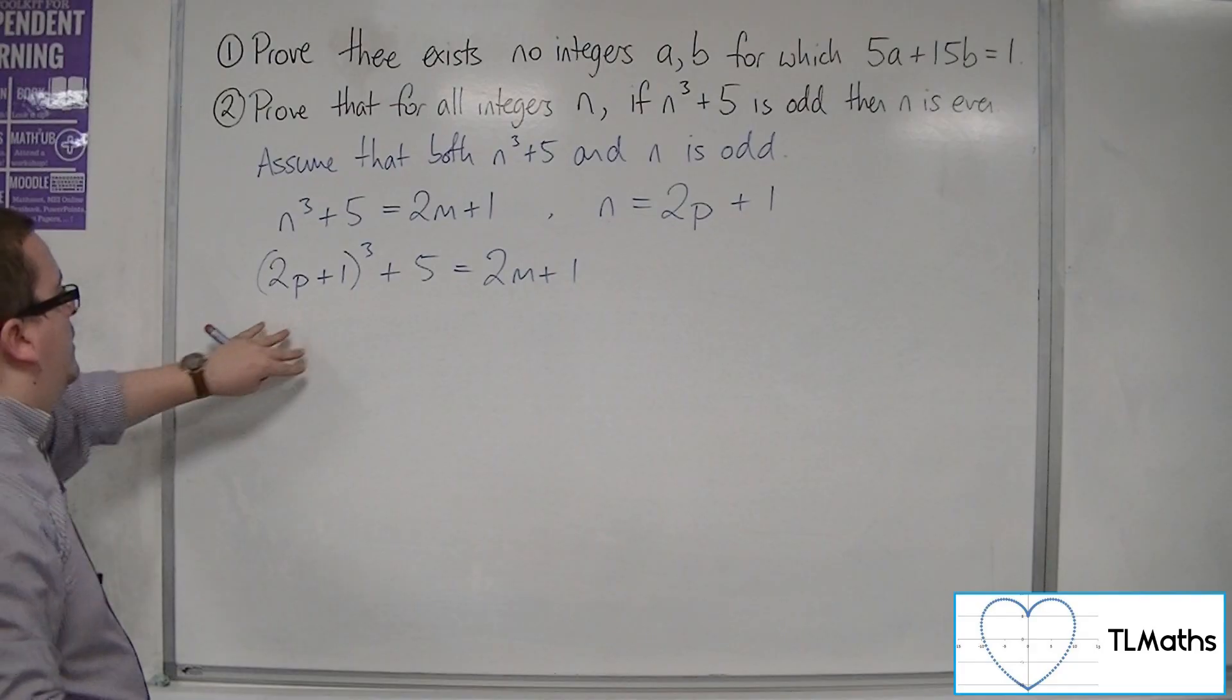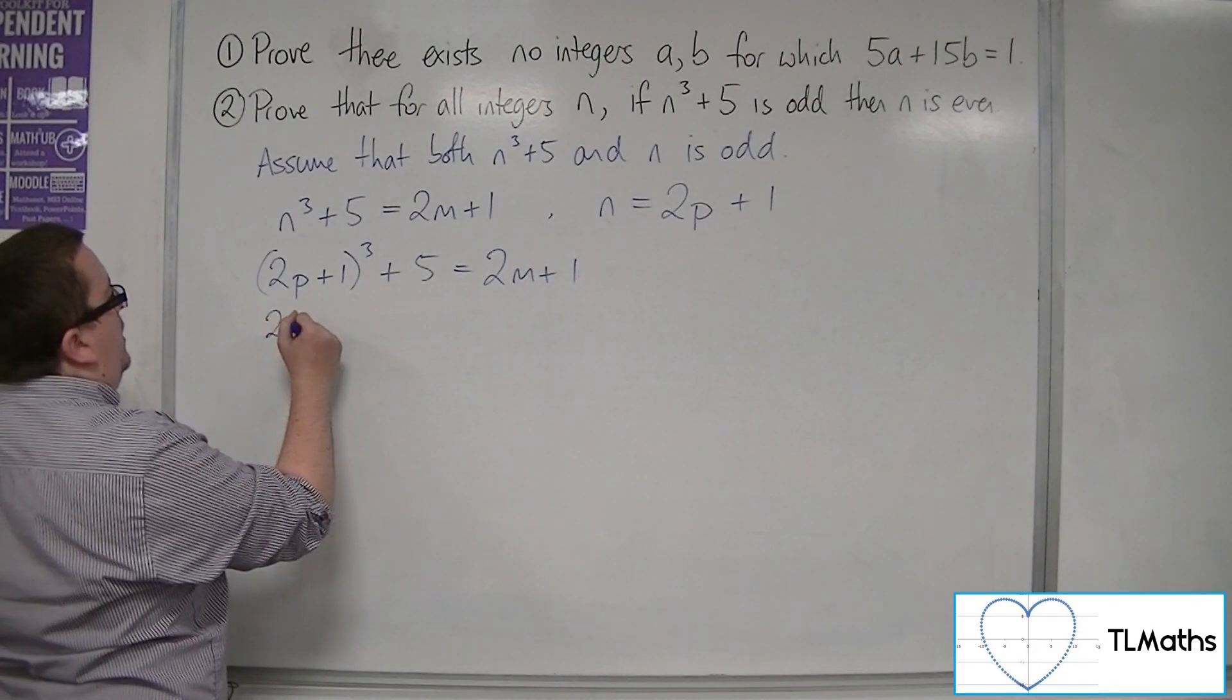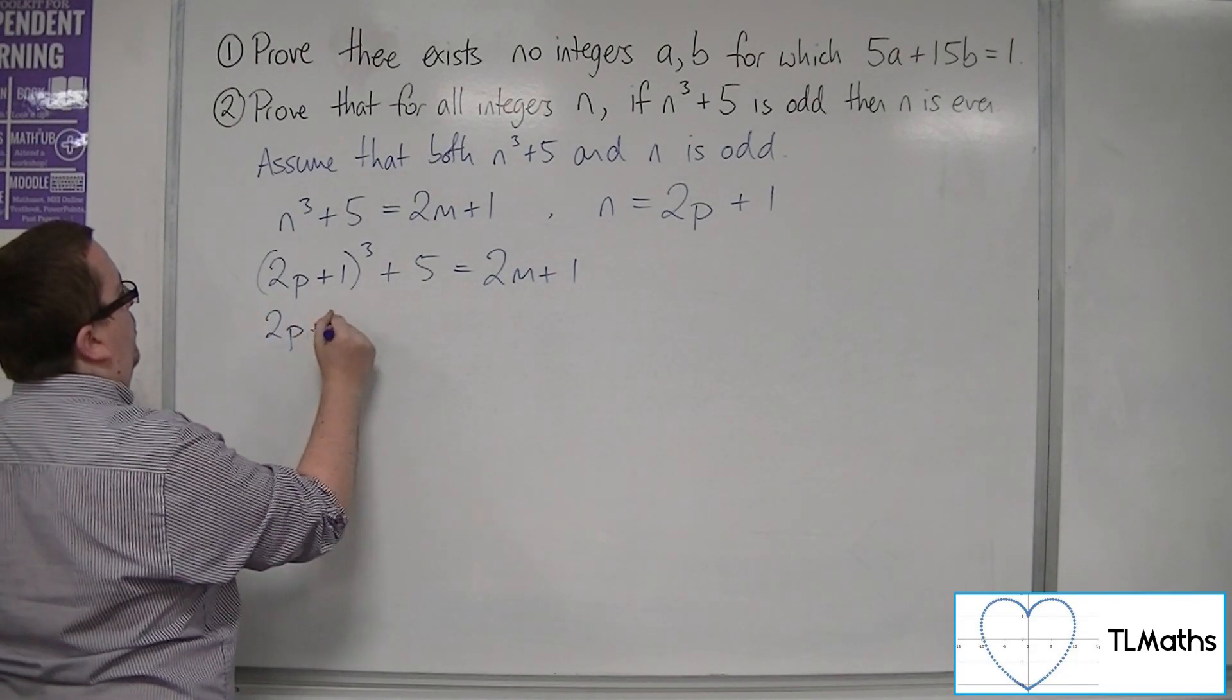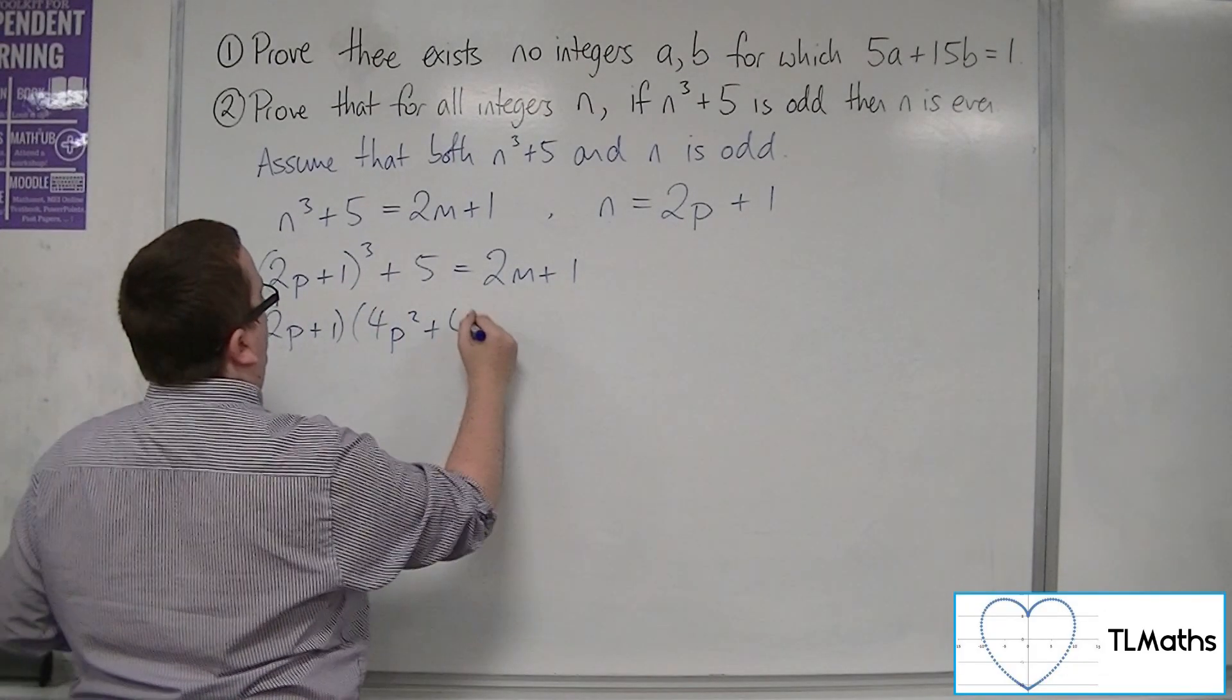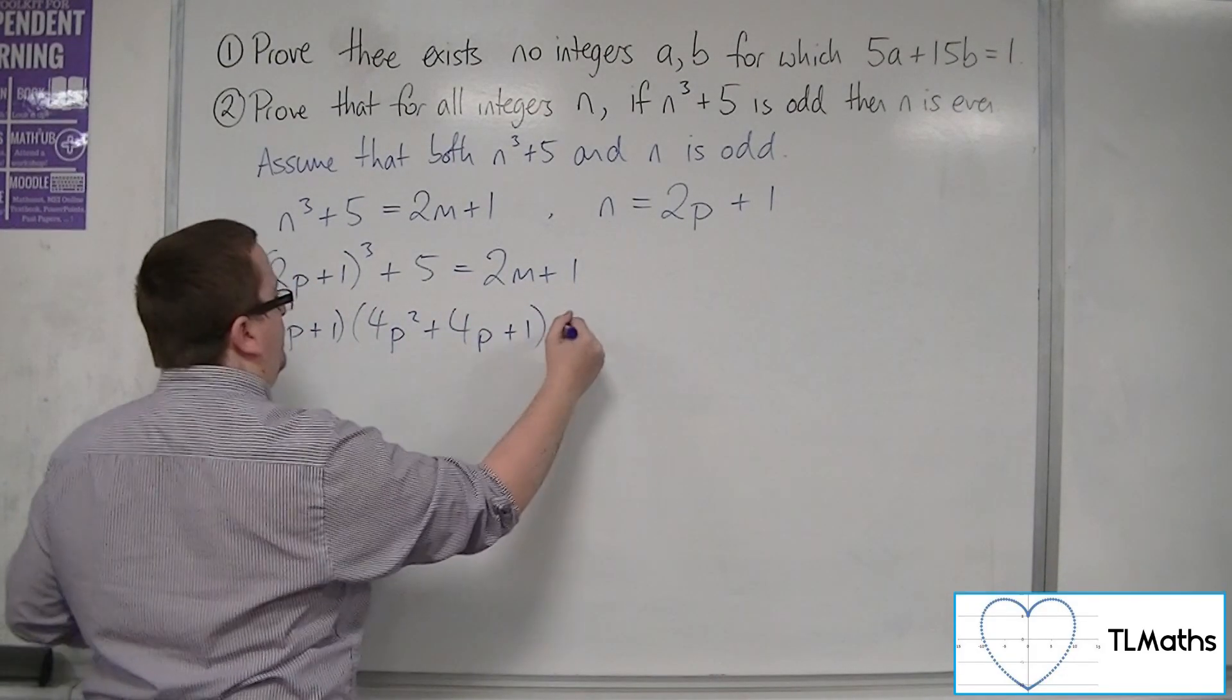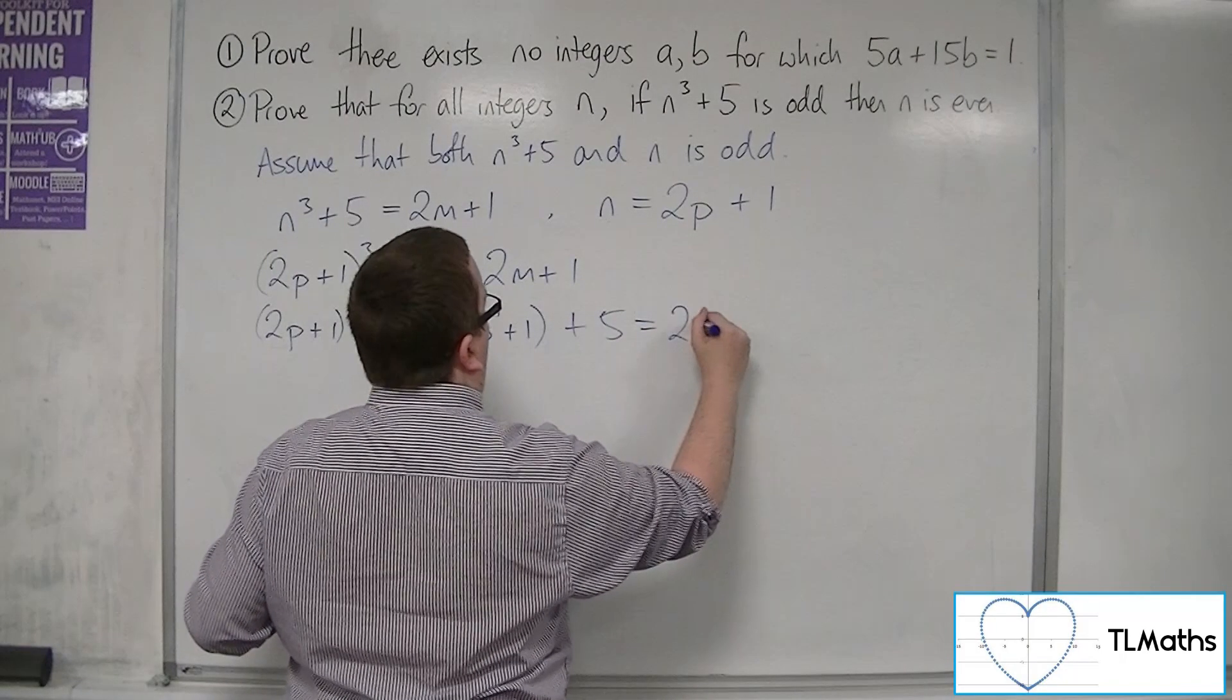So I'm going to have 2p plus 1 times 4p squared plus 4p plus 1 plus the 5 is equal to 2m plus 1.